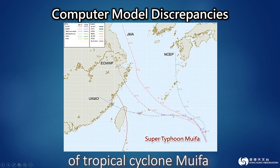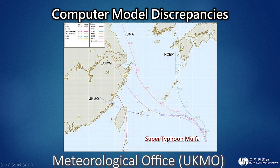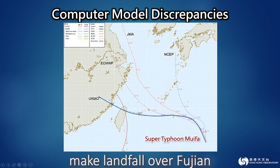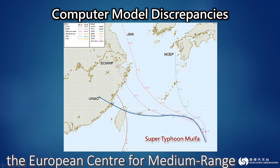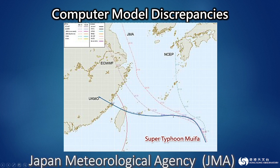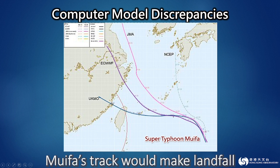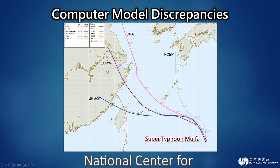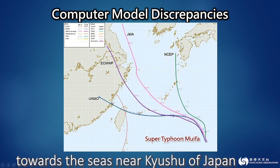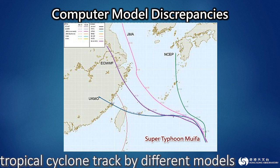Now, let's take a look at the forecasts of tropical cyclone Moifa by several meteorological services. The model used by the United Kingdom Meteorological Office (UKMO) predicted that Moifa would take a westward track, move across Taiwan, and make landfall over Fujian. On the other hand, the models from the European Centre for Medium-Range Weather Forecasts (ECMWF) and the Japan Meteorological Agency (JMA) forecasted that Moifa would move northwestward — though only the former predicted landfall over Zhejiang. The model for the National Center for Environmental Prediction (NCEP) in the United States even forecasted that Moifa would take a northward track towards the seas near Kyushu of Japan. It can be seen that the forecasts of a tropical cyclone track by different models may have large discrepancies.